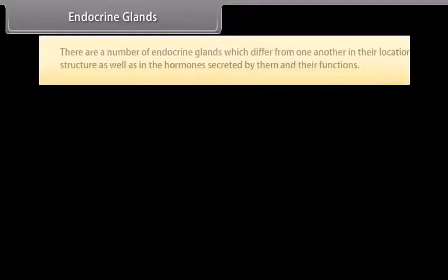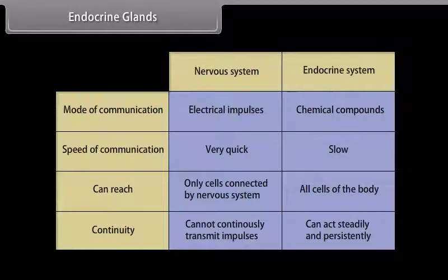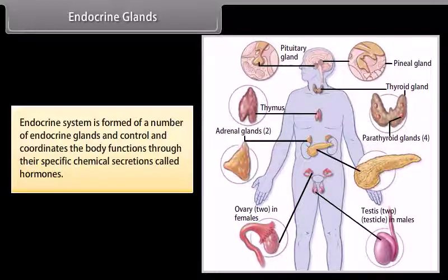There are a number of endocrine glands which differ from one another in their location, structure, as well as in the hormones secreted by them and their functions. The endocrine system is formed of a number of endocrine glands and controls and coordinates the body functions through their specific chemical secretions called hormones.